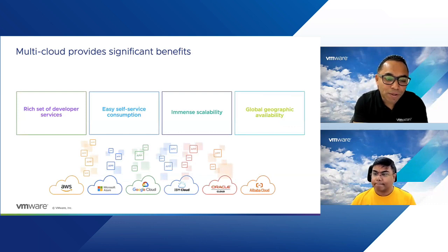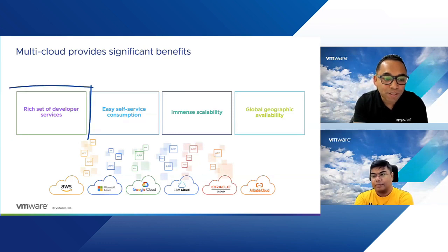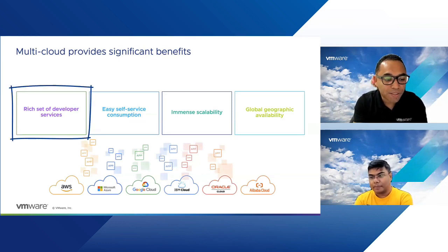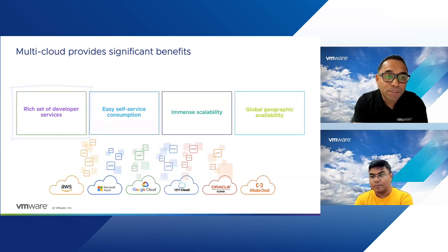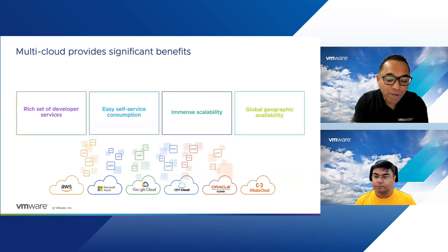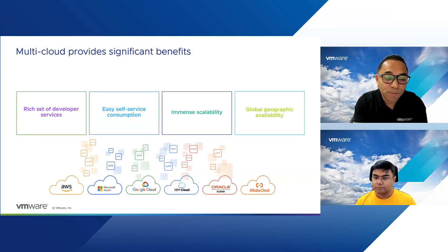So organizations are moving to multi-clouds for various reasons. One of the main reasons is the rich set of developer services that this multi-cloud environment offers. AWS has specialized sets of services that developers may be using. Similarly, in Google, they may be using things like ML, AI, and analytical tools. Various clouds have various specialties, and developers want to use this rich set of services to develop new and modernized apps.